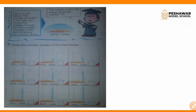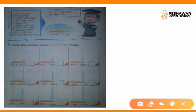This is a ball frame. The right row shows the number of 1s and the left row shows the number of 10s. In the first frame you have 1 ball — it means it's in the 1s. In the second you have 2 — it means it's in the 10s. For the first question, write the number shown in the ball frame: in the 1s we have 1, and in the 10s we have 1, so it will be 11.